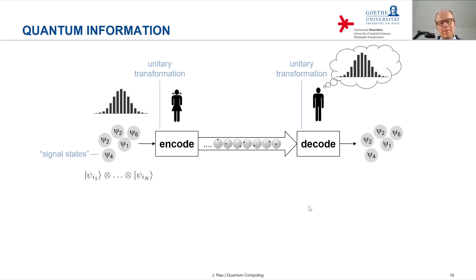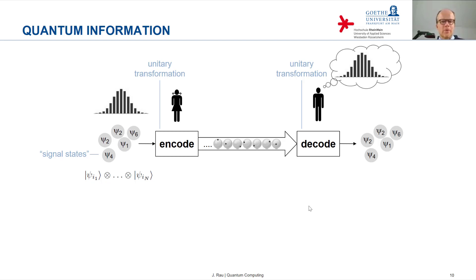The encoding and decoding are unitary transformations. There's no preparation of qubits and no measurement on the qubits. On Alice's side, she has the signal states and then performs a unitary transformation on the joint Hilbert space of the systems carrying the signal states and the qubits used to encode them. She then sends the qubits. Bob also has physical systems whose states he wants to reconstruct, and he performs a unitary transformation on the joint Hilbert space of the received qubits and those physical systems.